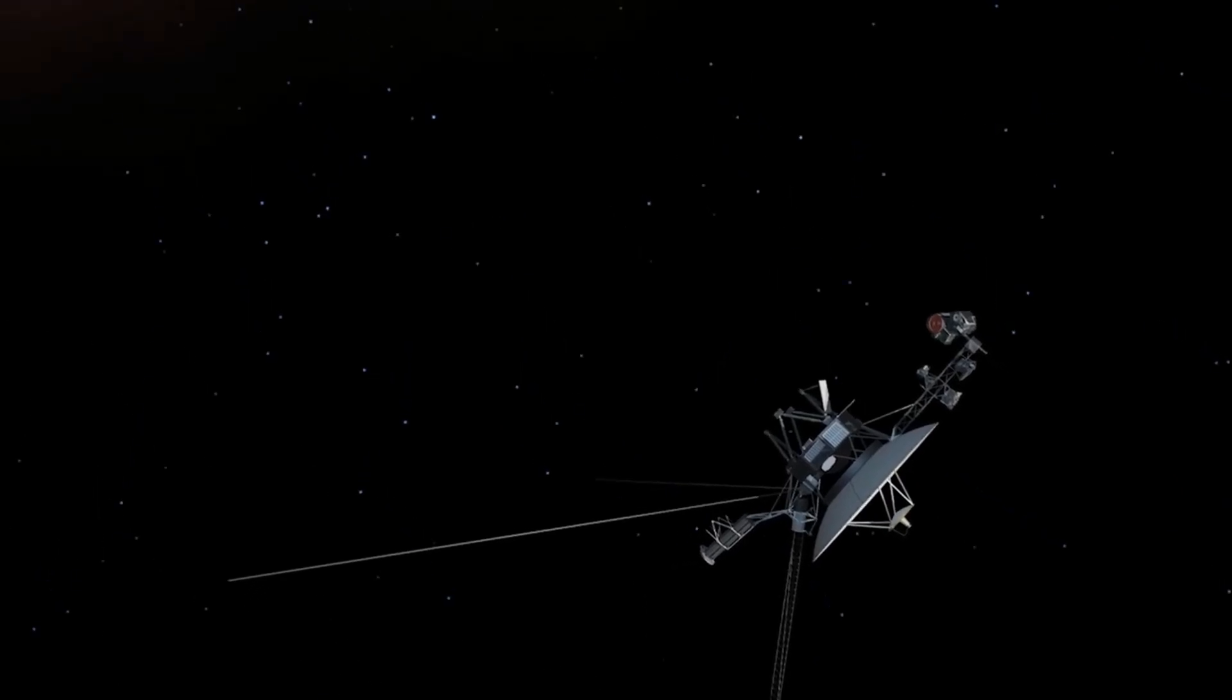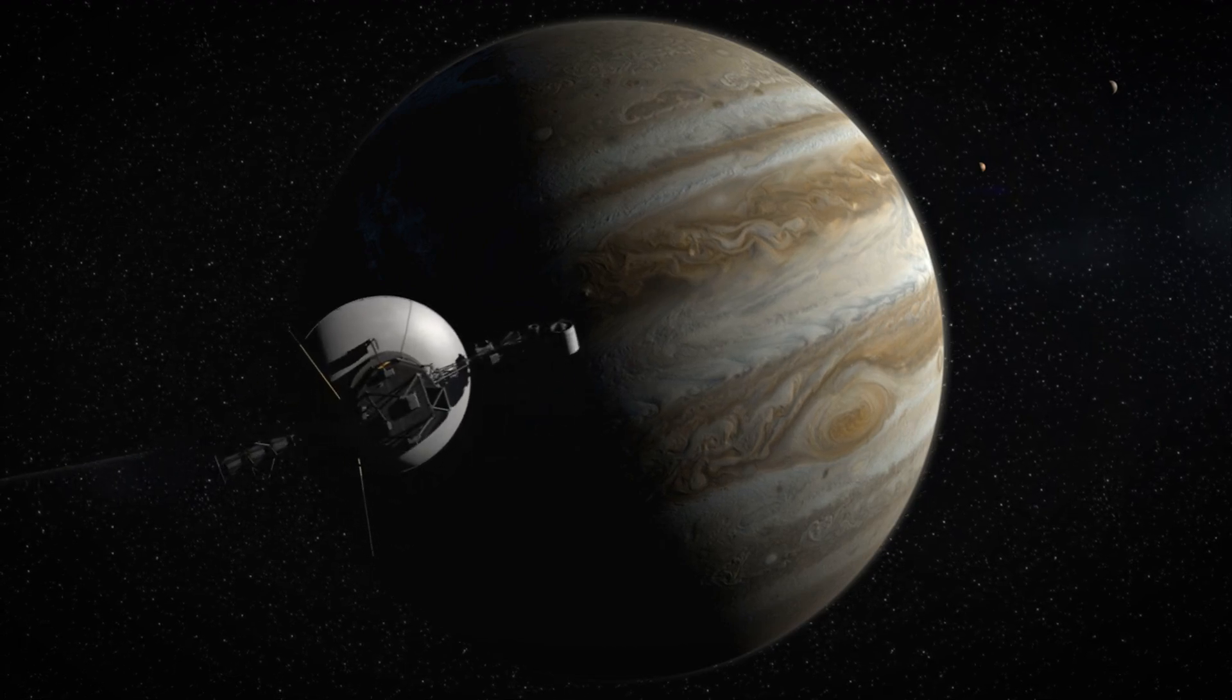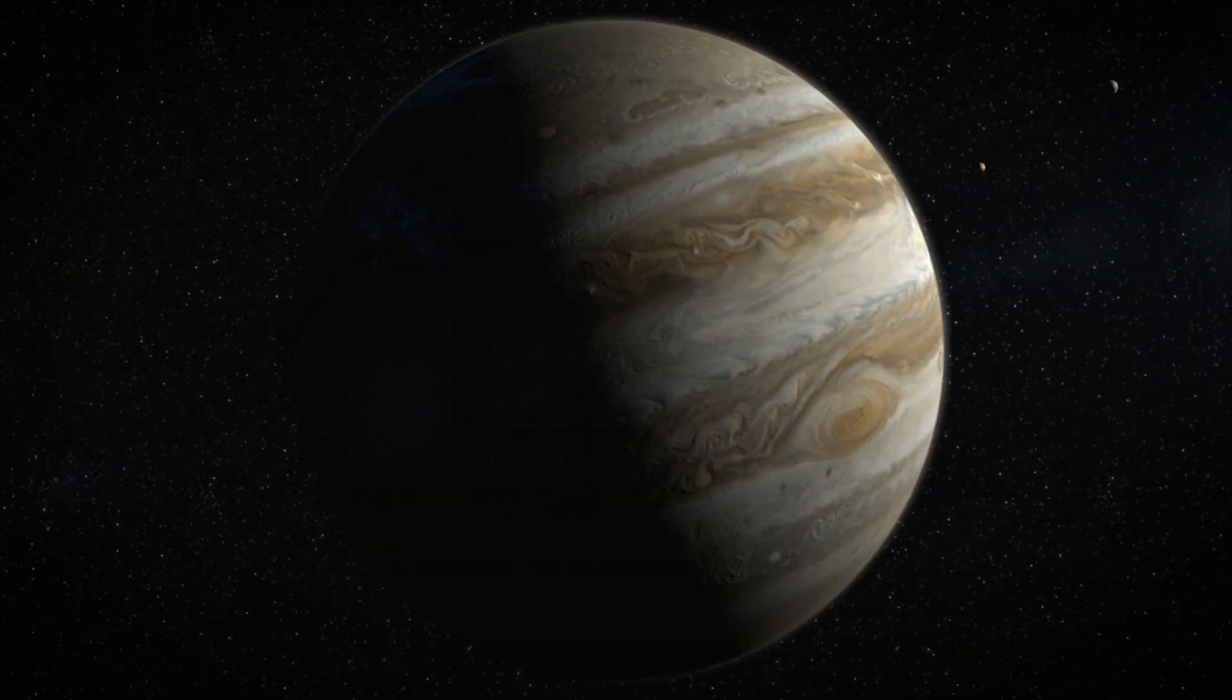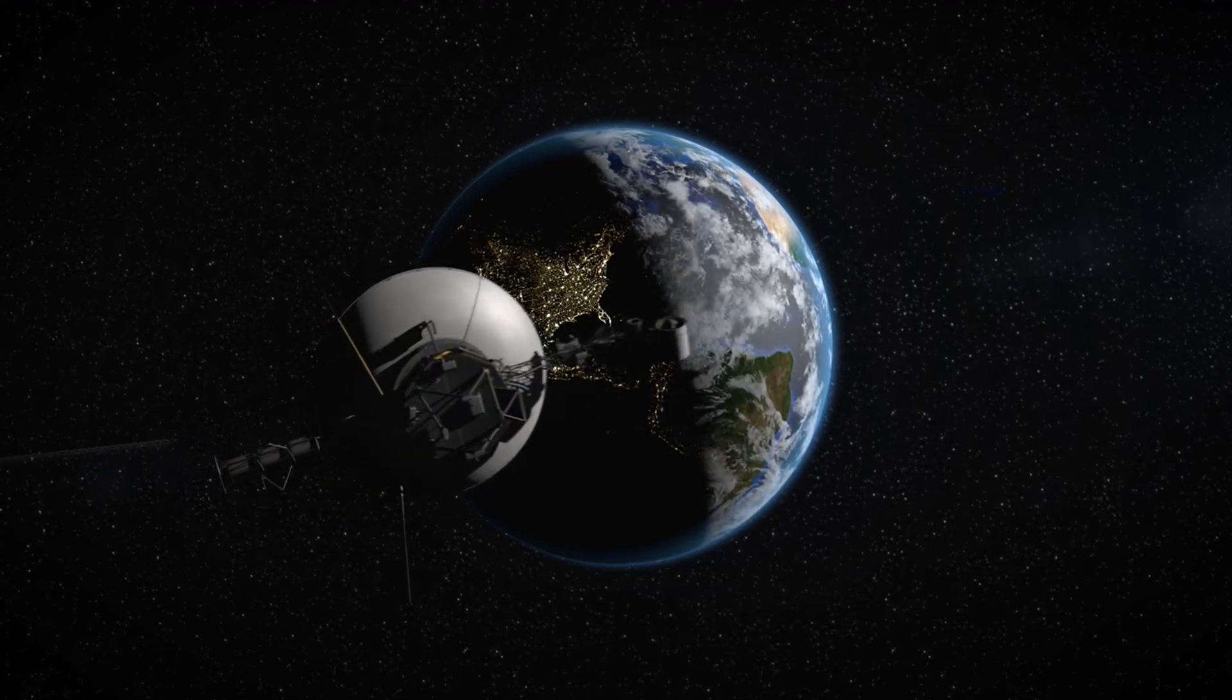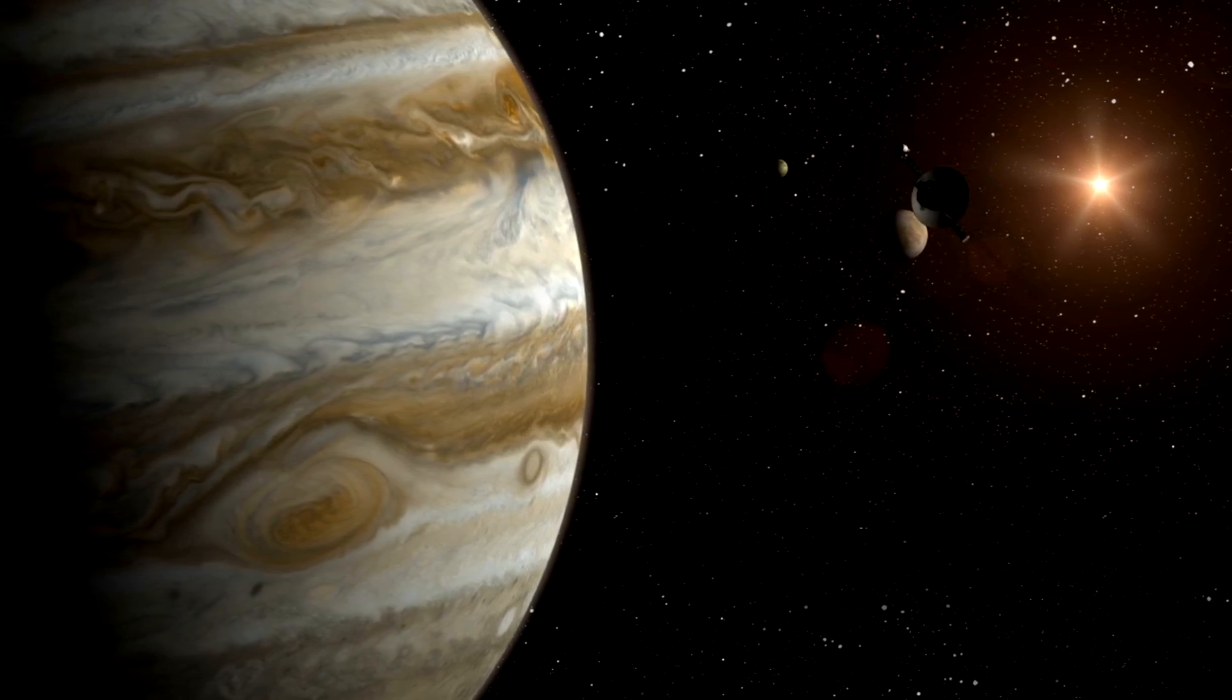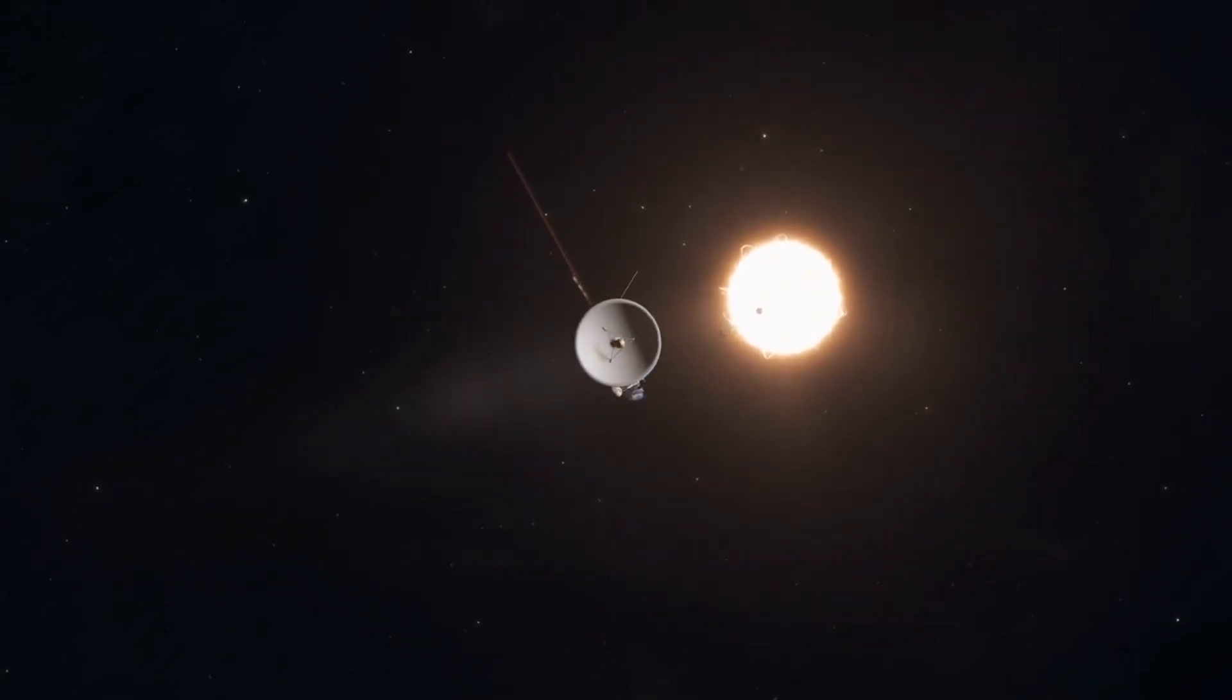On September 5, 1977, Voyager 1 was launched from Cape Canaveral, Florida, using a Titan 3E Centaur rocket, beginning an incredible journey. Thirteen days earlier, on August 20, 1977, Voyager 2 started a parallel mission. Their primary objective was to investigate the moons of the gas giants Jupiter and Saturn in our solar system. These brave adventurers far exceeded their original objectives by embarking on a trip that led them to the furthest reaches of our cosmic neighborhood.